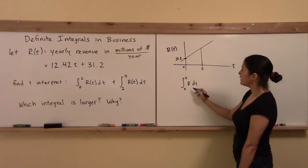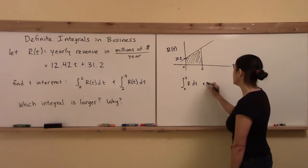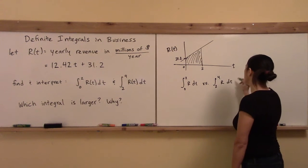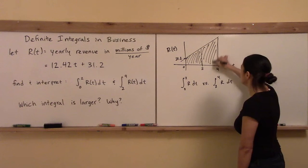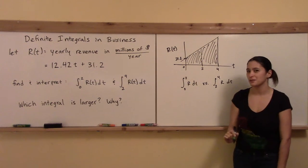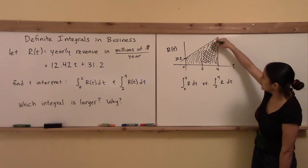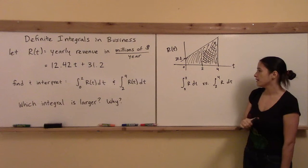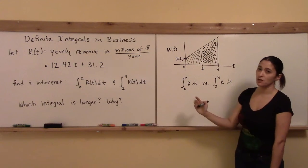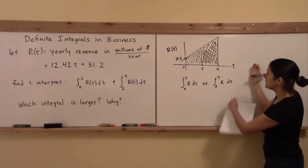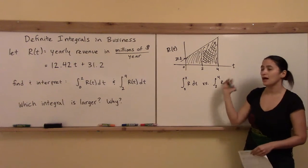The integral from 0 to 2 corresponds to the area of one trapezoid, while the integral from 2 to 4 corresponds to the area of another trapezoid further along the curve. The second integral is going to be larger because you can see it has more area under the curve. The function is increasing, so the area on an interval farther out in time is larger because the height of the function keeps going up.